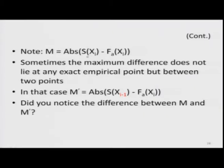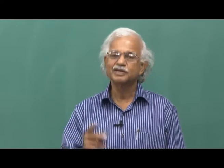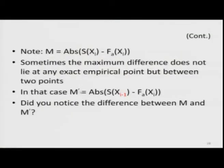Note that M is an absolute difference — plus or minus sign is not important, we only look at the absolute difference without considering sign. Sometimes the maximum difference does not lie at any exact empirical value of x but between two values. In that case M' is computed as the absolute difference between S(x_{i−1}) and F(x_i) — we compare S for the preceding value of x with F for the given value of x.